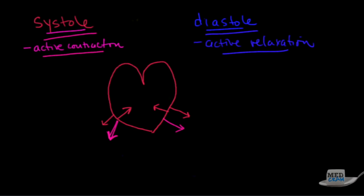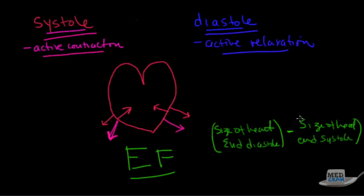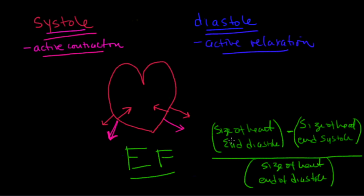There is something known as the ejection fraction, otherwise known as the EF. The ejection fraction is simply the size of the heart at end diastole — in other words the size of the heart when it's at its largest — minus the size of the heart at end systole, which is the size of the heart after it contracts. Essentially, we're looking at how much blood was pumped out of the heart divided by the size of the heart at the end of diastole. The ejection fraction is the proportion of blood the heart can pump out in one contraction.